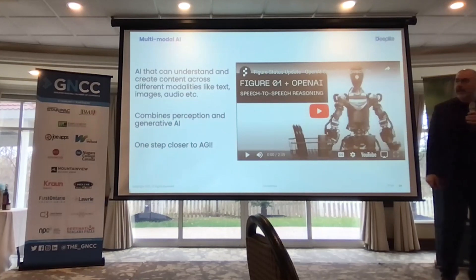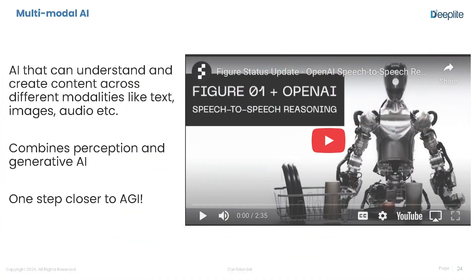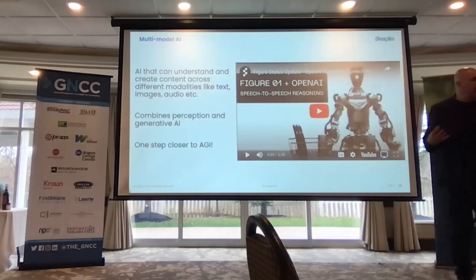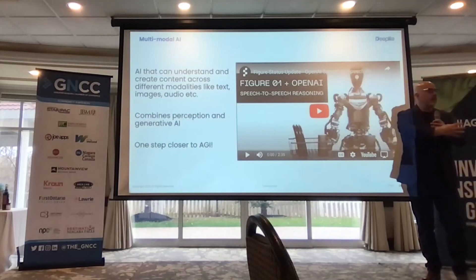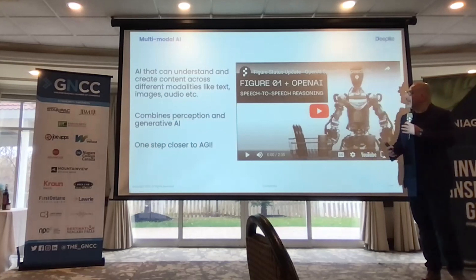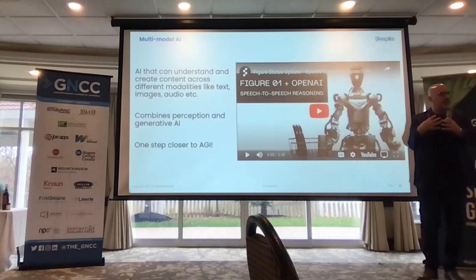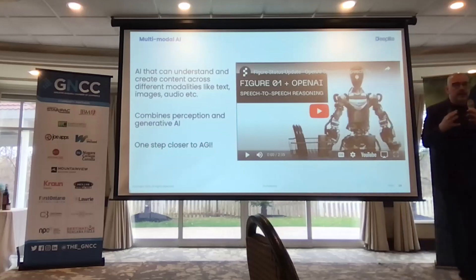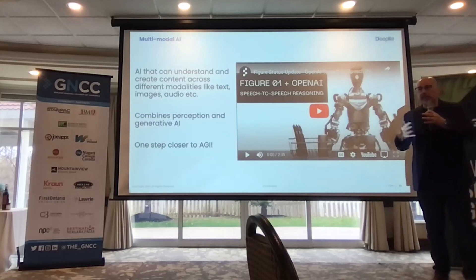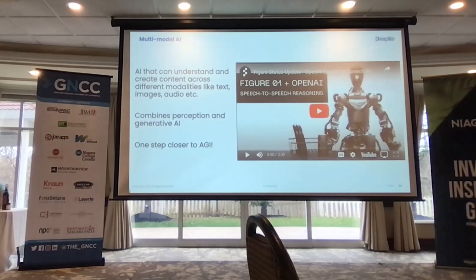So we've talked about perception-based AI — vision, hearing, audio — and generative AI. Then there's robotics and this convergence: vision, hearing, touch, mobility. That's what they call multimodal AI — bringing all these things together into a single system, combining perception and generative AI. This gets us one step closer to artificial general intelligence, because all of a sudden you can interact with something that crosses multiple domains.